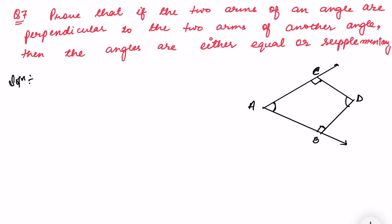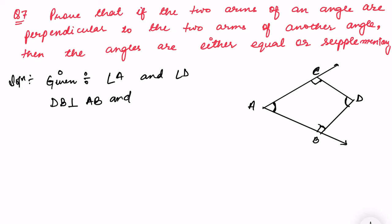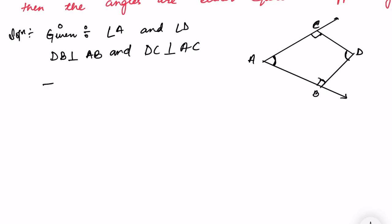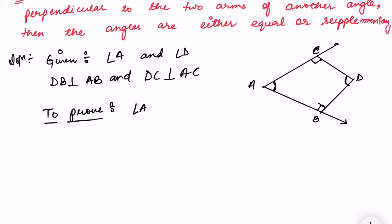This is given. We need to prove that angle A and angle D are either equal or supplementary. So, what is given: angle A and angle D are given. Line DB is perpendicular to AB, and line DC is perpendicular to AC. To prove: angle A and angle D are either equal or supplementary.